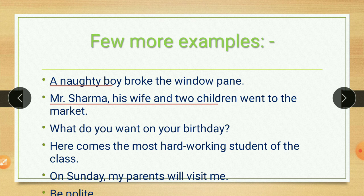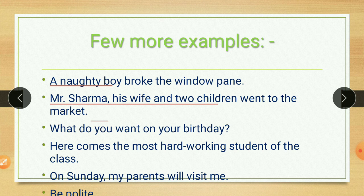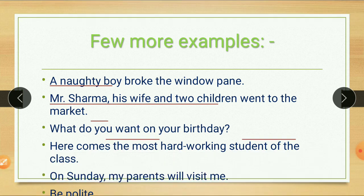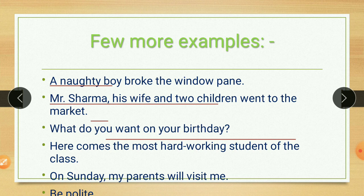'What do you want on your birthday?' Whom are we talking about? 'You' is the subject, and the rest is the predicate. Next: 'Here comes the most hard-working student of the class.' Who are we talking about? 'The most hard-working student of the class' is the subject, and 'here comes' is the predicate. Next: 'On Sunday, my parents will visit me.' Whom we are talking about? 'My parents' is the subject, and the rest is the predicate.